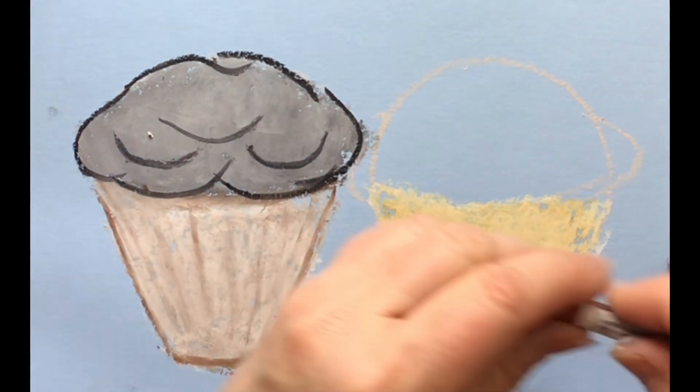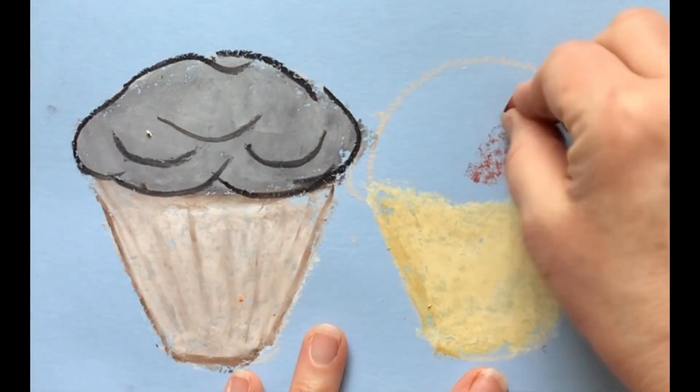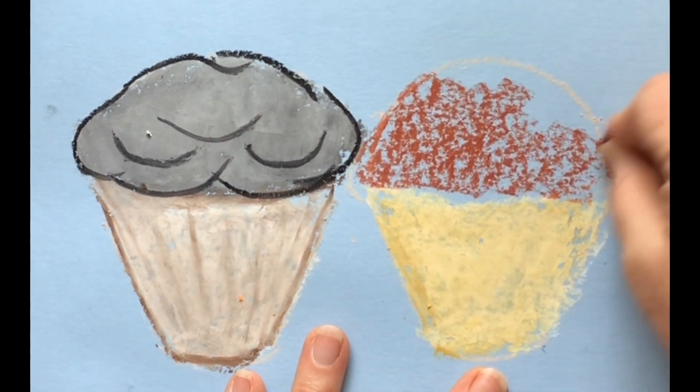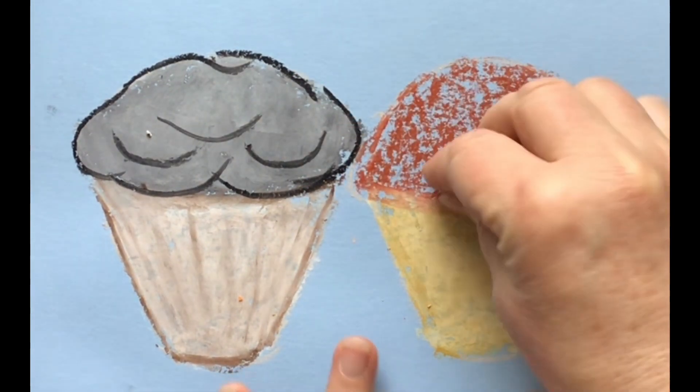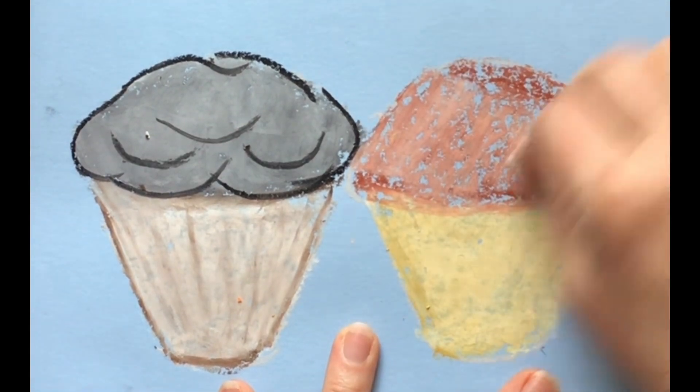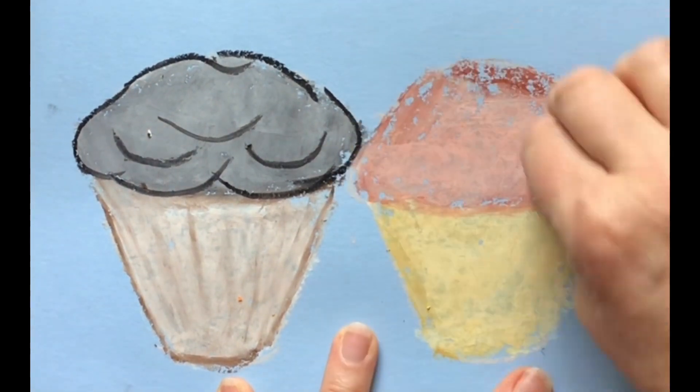Then after that I'm going to take what's called burnt sienna and use a little tiny piece, lightly put it down and then add white. And just again repeat the steps where I'm blending it, I'm making a tint and that would be considered a neutral color.